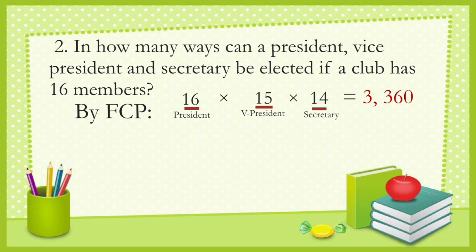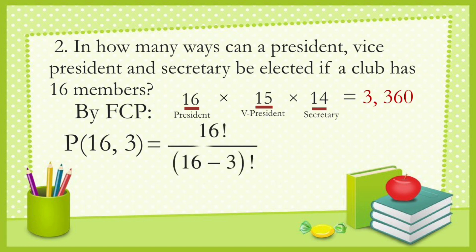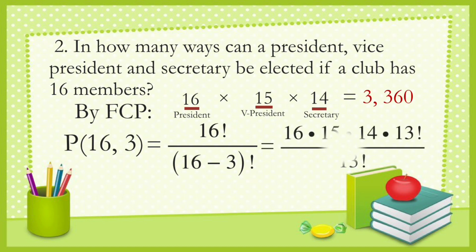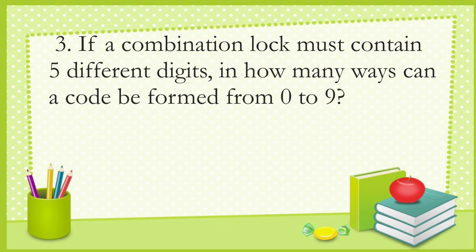Using the permutation formula, that is P(16, 3), equal to 16 factorial all over (16 minus 3) factorial, which equals 16 × 15 × 14 × 13 down to one, all over 13 × 12 × 11 down to one. Crossing out the same numbers, the remaining are 16 × 15 × 14, which equals 3,360.